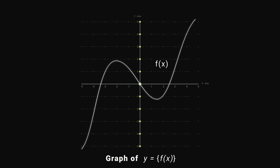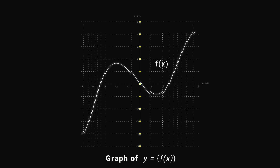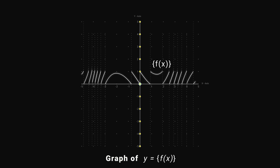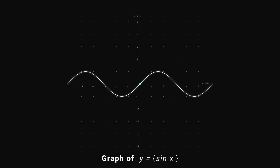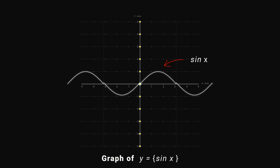Draw horizontal lines for all integer values of y. Then draw vertical lines from the points at which these horizontal lines cut the graph. Now shift all the parts between y = 0 and y = 1. For example, when y equals the fractional part of sin x, draw sin x and draw horizontal lines for all integer values of y, then draw vertical lines from the intersection points and shift all parts between y = 0 and y = 1.